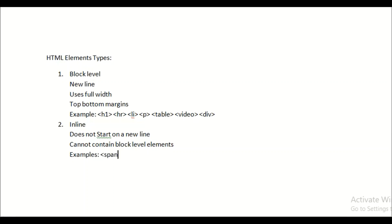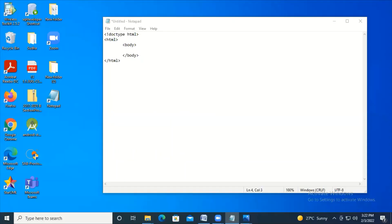Examples of inline elements are: span, anchor (a), img, b, strong, and br — all of these are examples of inline elements. Now let us see a demonstration of block level elements and inline elements.